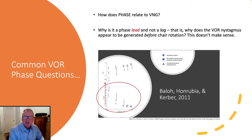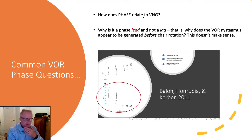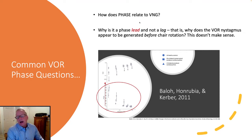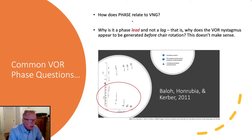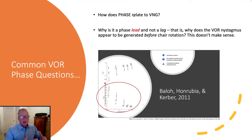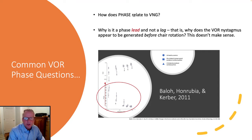So how does phase relate to VNG? To be honest, it doesn't. This is an advantage of the chair, where it will actually give us this phase relationship that gives us insight into the velocity storage and neural integrator central mechanisms that VNG doesn't provide.